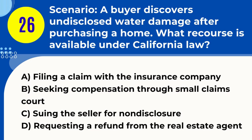Question 26. Scenario: A buyer discovers undisclosed water damage after purchasing a home. What recourse is available under California law? A. Filing a claim with the insurance company. B. Seeking compensation through small claims court. C. Suing the seller for nondisclosure. D. Requesting a refund from the real estate agent. Answer: C. Suing the seller for nondisclosure. Explanation. Under California law, if a buyer discovers undisclosed water damage after purchasing a home, they may have legal recourse to sue the seller for nondisclosure. Sellers are required to disclose known material defects, and failure to do so can lead to legal action.